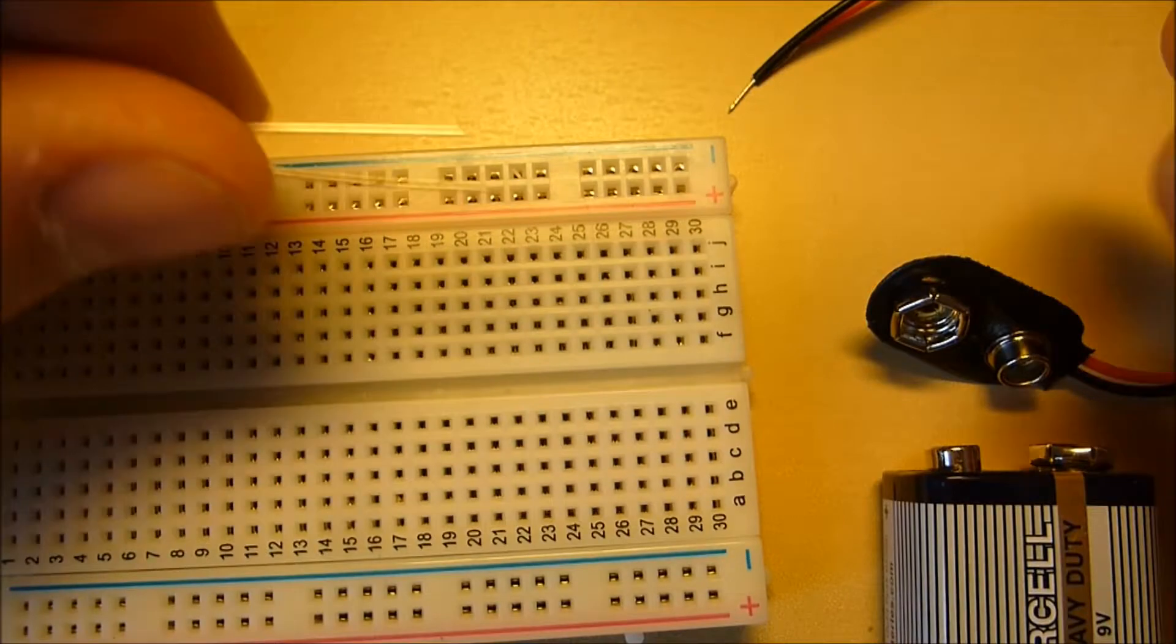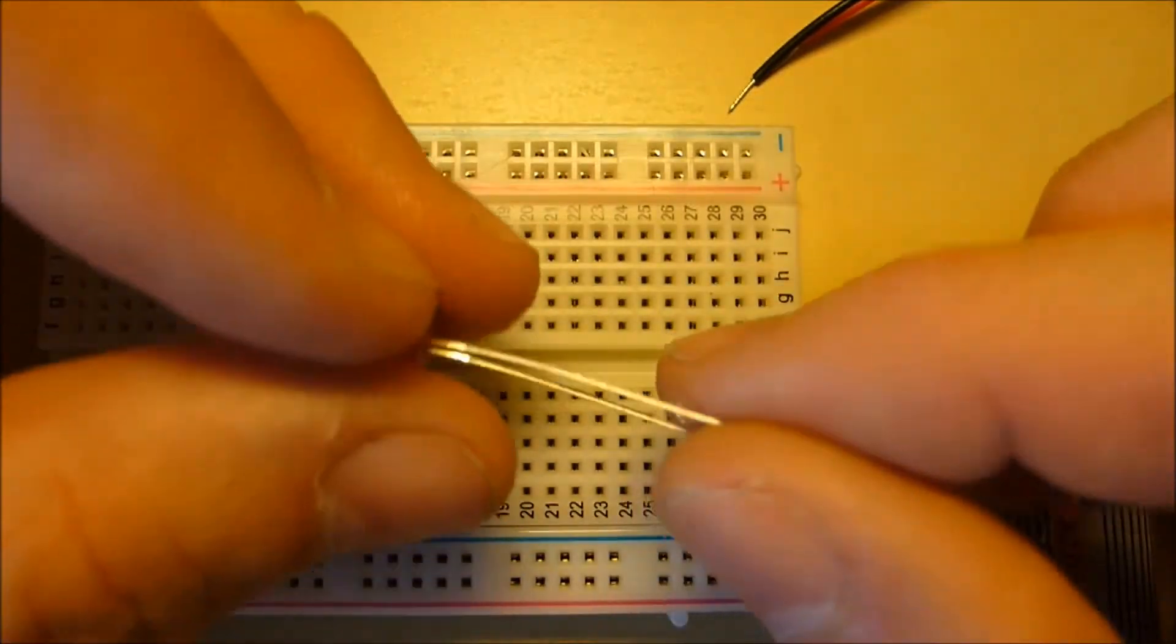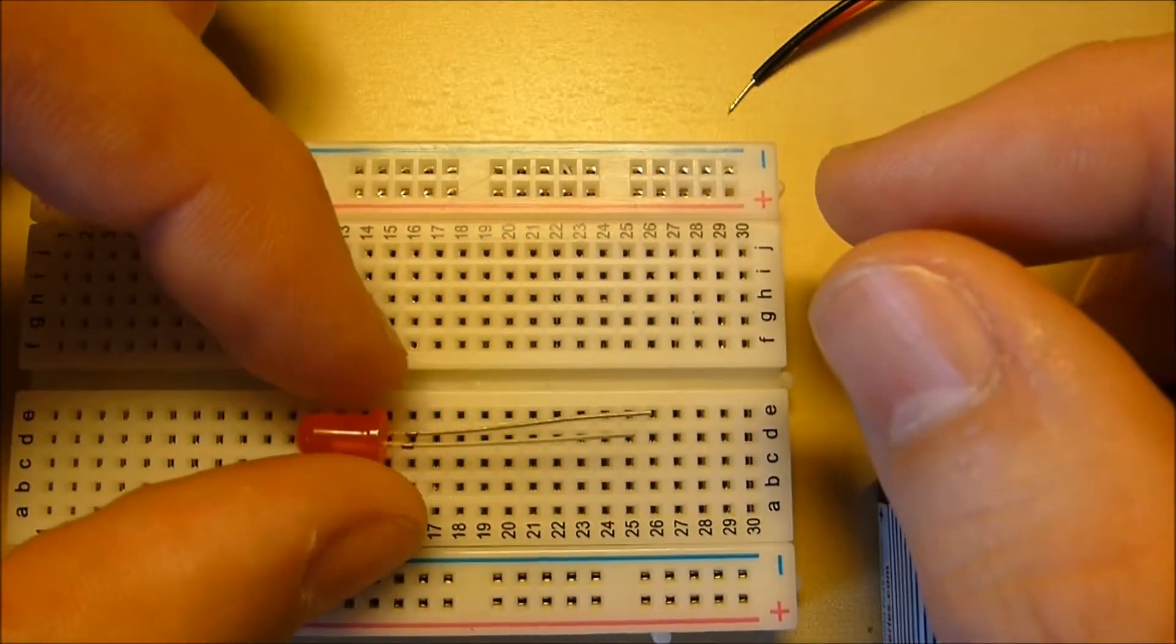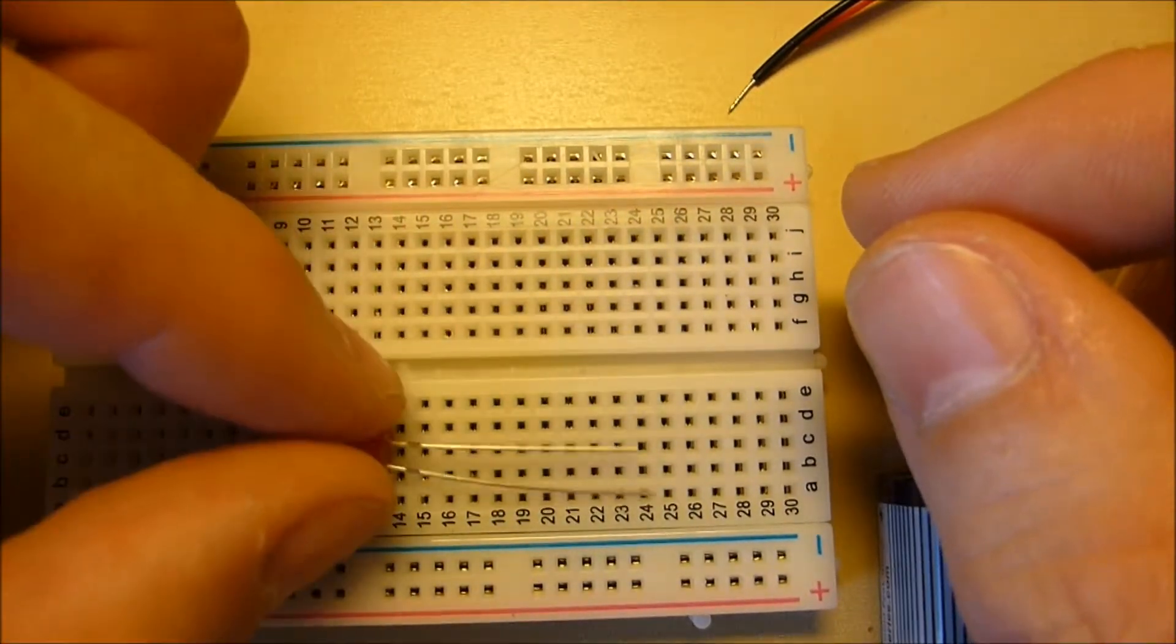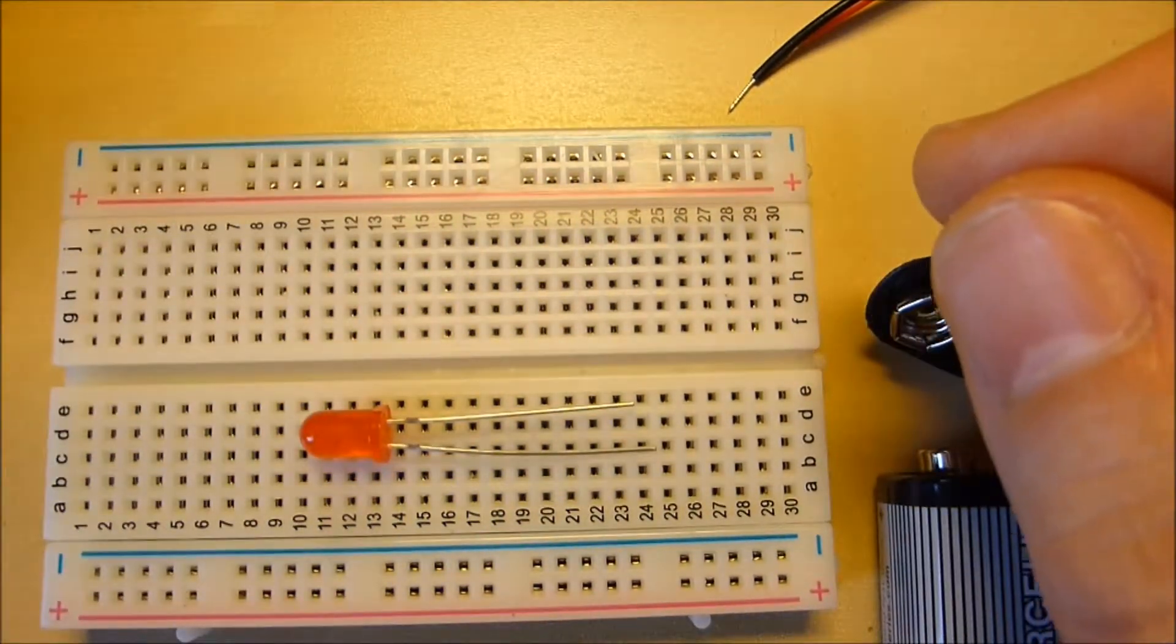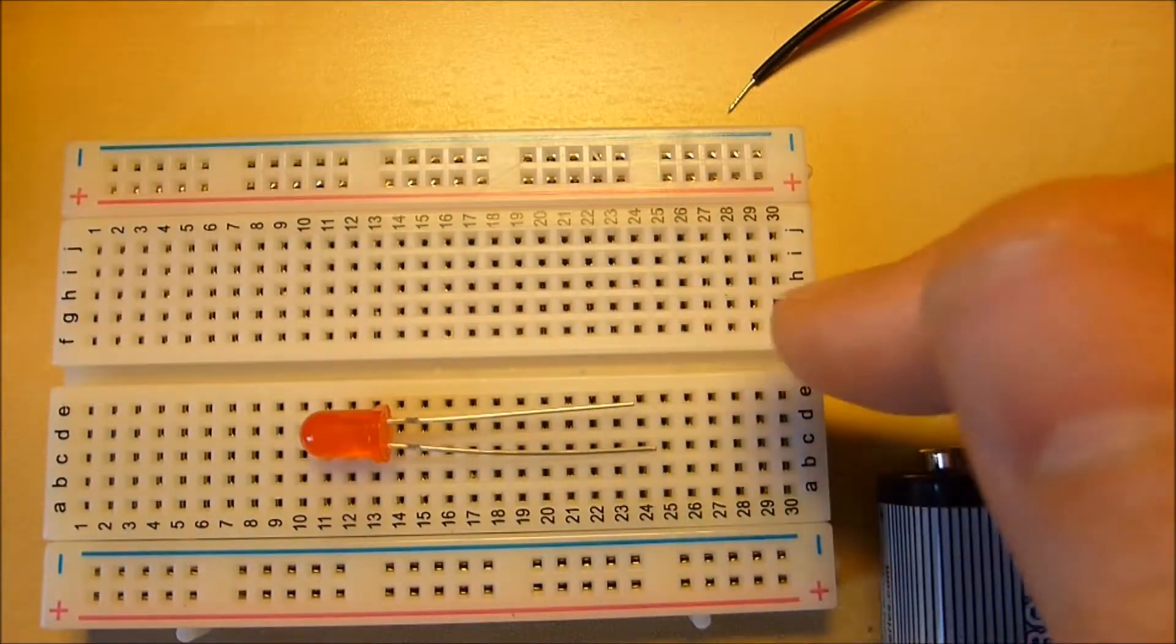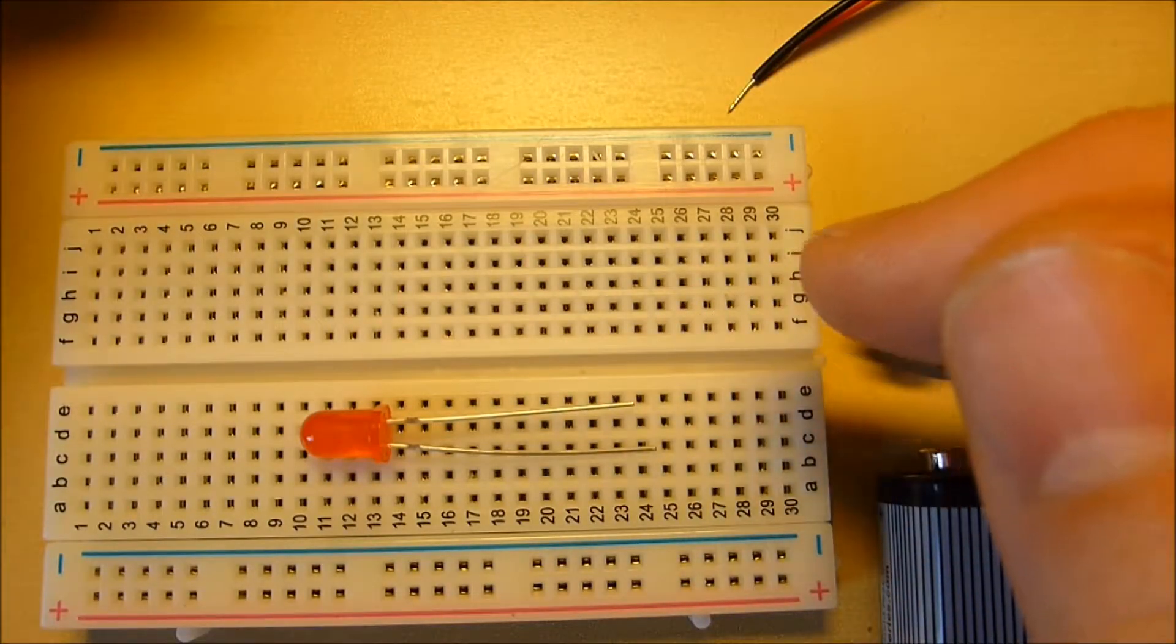So the important thing about LEDs is that they're polarised, which means that they have to be connected a certain way around. So this LED, you'll see it's got two terminals coming out of it. A longer one, that's the positive one, and the shorter one is the negative terminal.